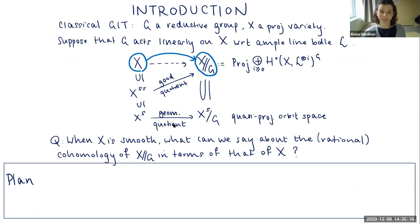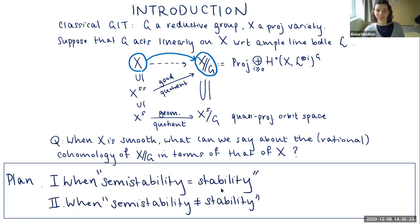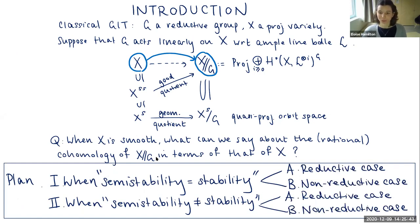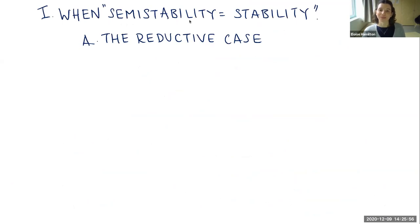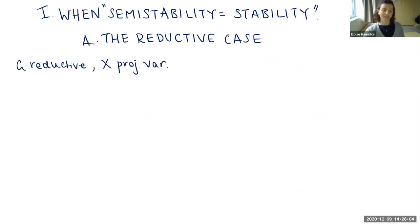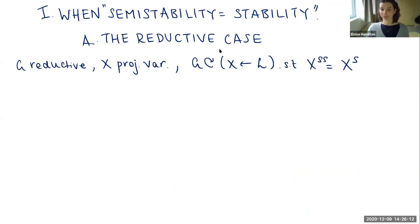There are two scenarios to consider: the case where semi-stability equals stability, and the case where it doesn't. I've put these conditions in quotation marks because in the non-reductive case they are analogues of the classical conditions, which I'll explain. Both parts of the talk will be split into two halves: where we consider the reductive case and the non-reductive case. I'll start with the best case — when semi-stability coincides with stability and the group is reductive.